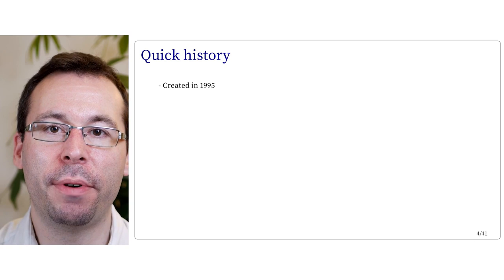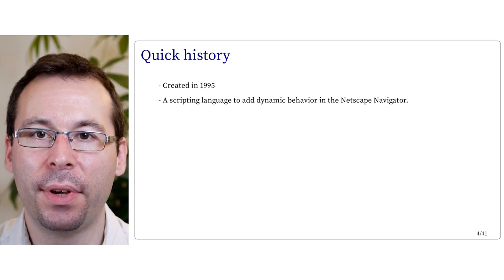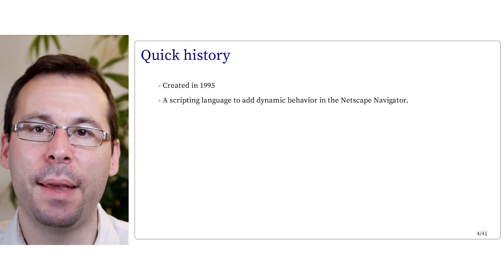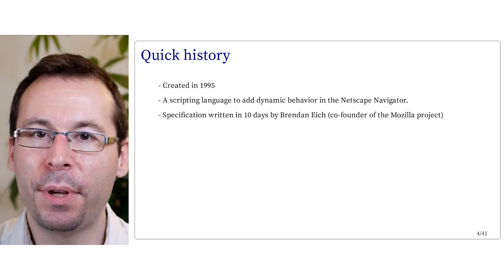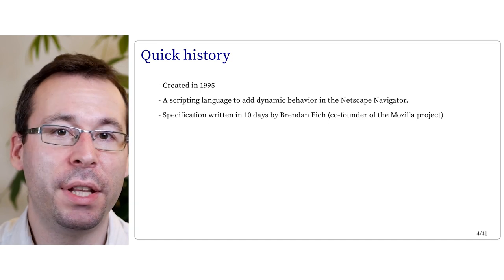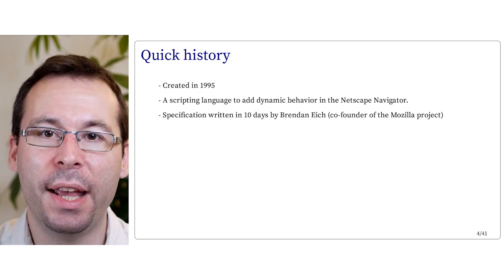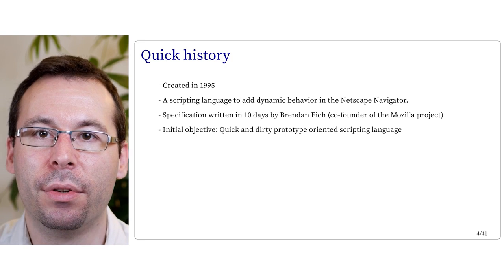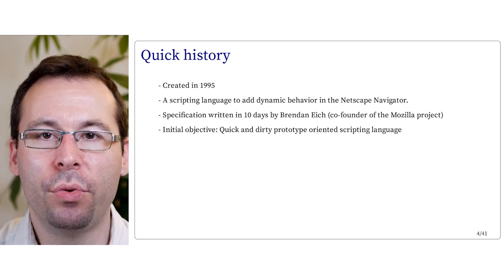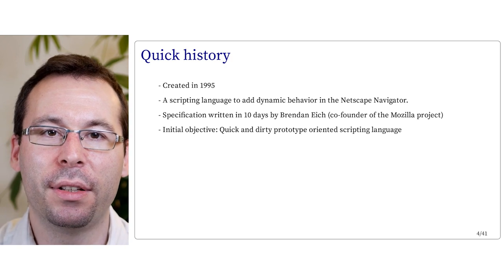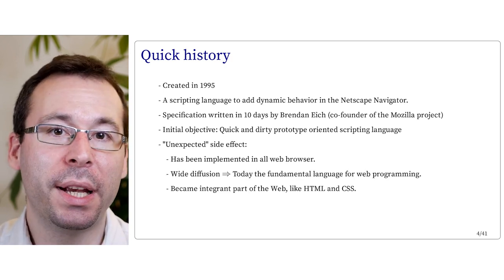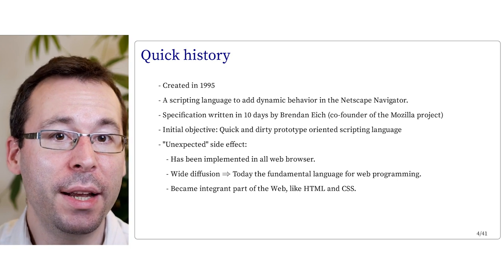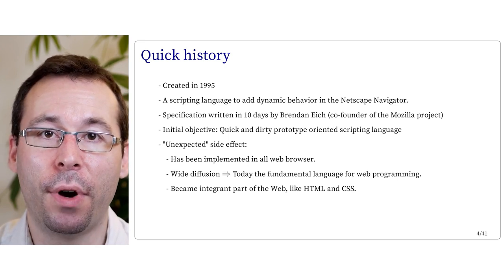A few words about JavaScript. It's a language that was created in 1995. Initially it was developed to be a scripting language to add dynamic behavior in the Netscape Navigator, which is an old web browser. The specifications of the first version of JavaScript were written in about 10 days only by Brendan Eich, who is the co-founder of the Mozilla project that makes Firefox. The initial objective was to create a quick and dirty prototype-oriented scripting language. Unexpectedly, JavaScript was implemented in all web browsers, leading to very wide diffusion, and today it is the fundamental language for web programming.